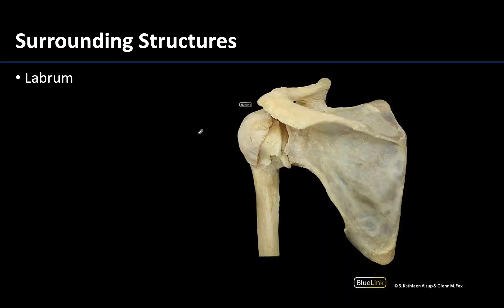Lastly, I want to mention the labrum. The labrum is a fibrocartilaginous lip that circumscribes the glenoid fossa, allowing a slightly better fit between the articulating bones. You really only find labra associated with ball and socket joints — one here with the shoulder joint and one with the hip joint as well. The joint capsule has been incised here to get a slight view into the actual joint, and you can see a bit of the labrum right in this region, with the glenoid fossa located right about here.